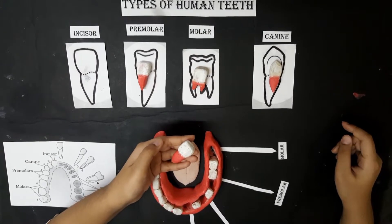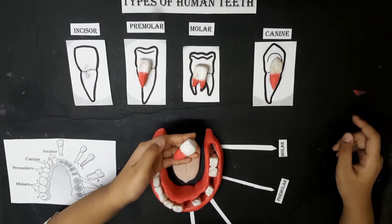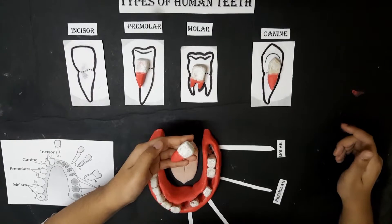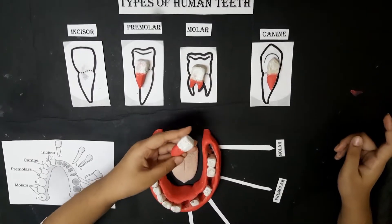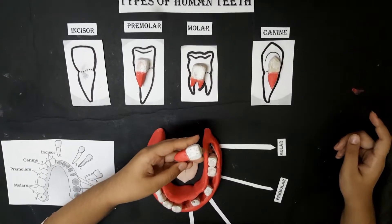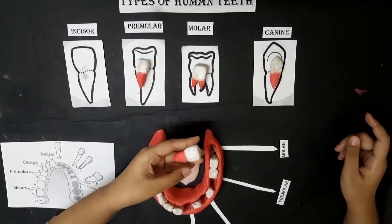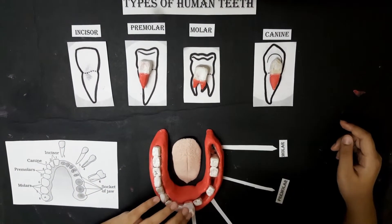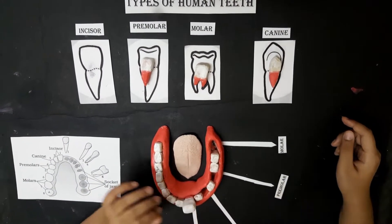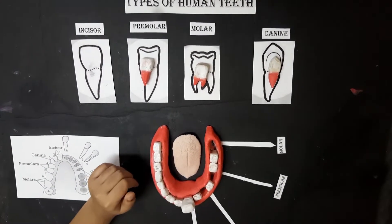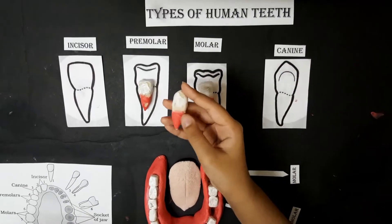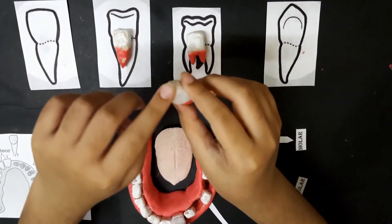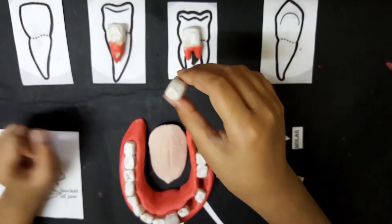There are eight incisors — four on the bottom and four on top. They are used for biting and cutting food, and they are at the front of the mouth. This is a canine — they are long and sharp.